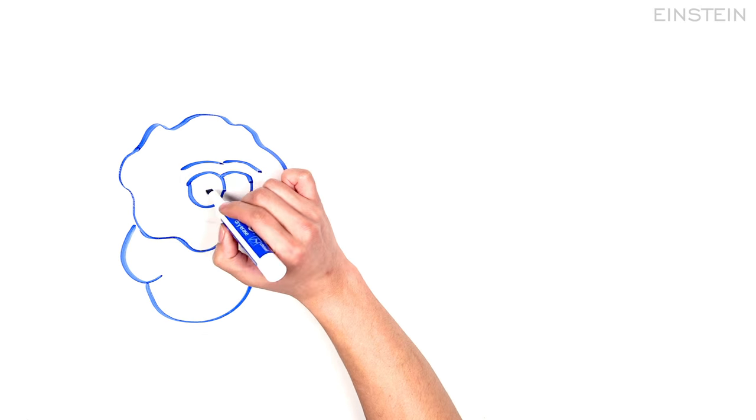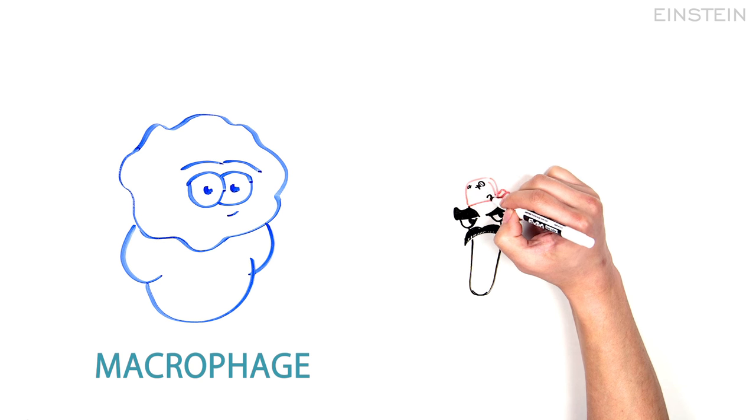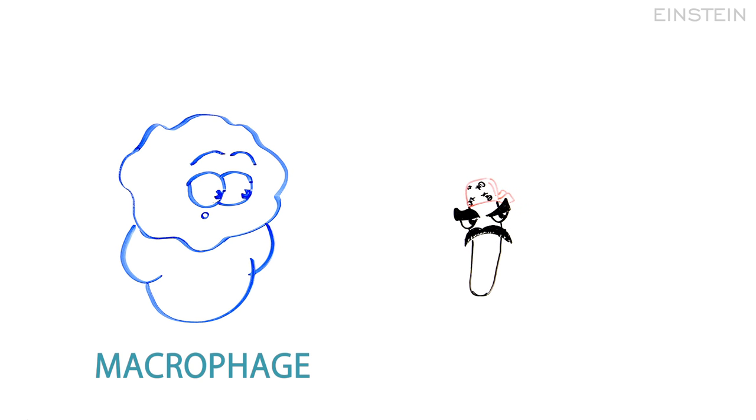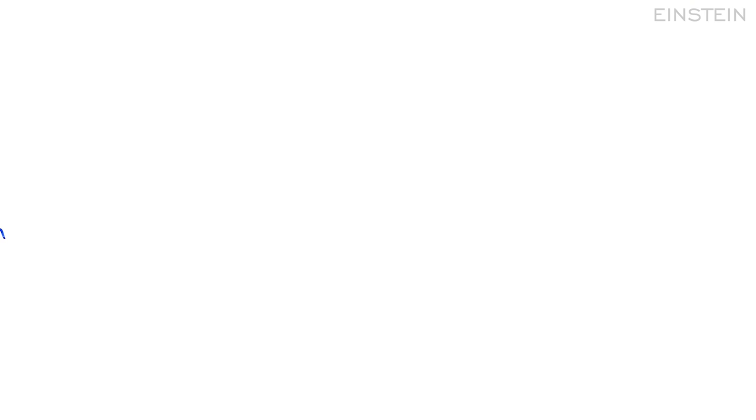The first cell we'll meet is the macrophage. Macrophages are the front line of our immunological army, surveilling for foreign invaders at all times. When a macrophage encounters a pathogen, it immediately engulfs and destroys it. Then the macrophage travels to the lymph node, which is like a home base for your immunological army.